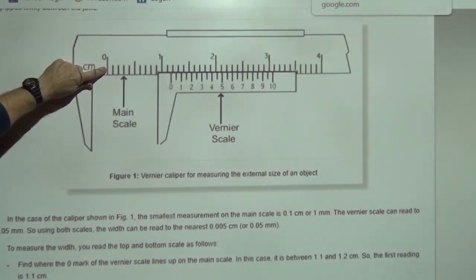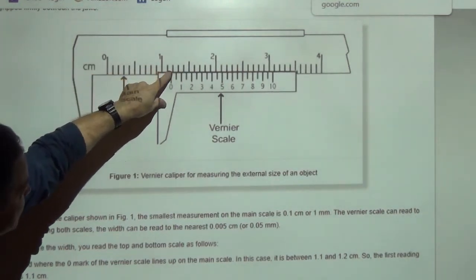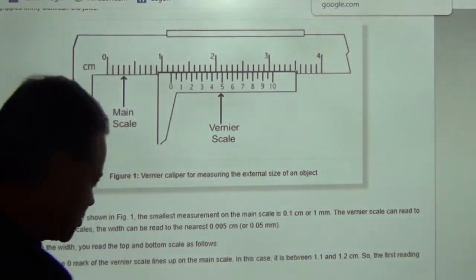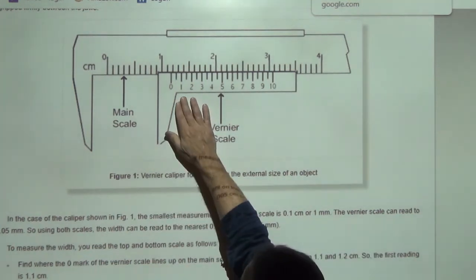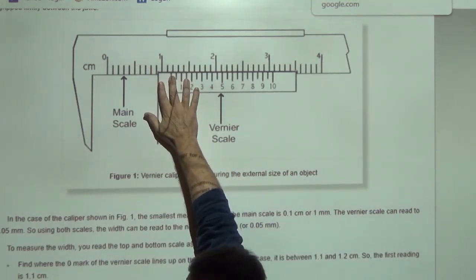And that's how you get your measurement. So here we see the zero is somewhere in between the one and the two, and more specifically in between the 1.1 and 1.2 right there.